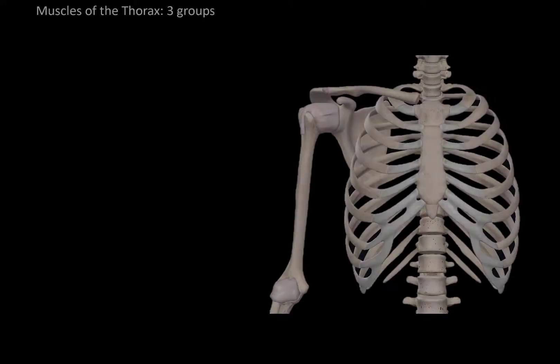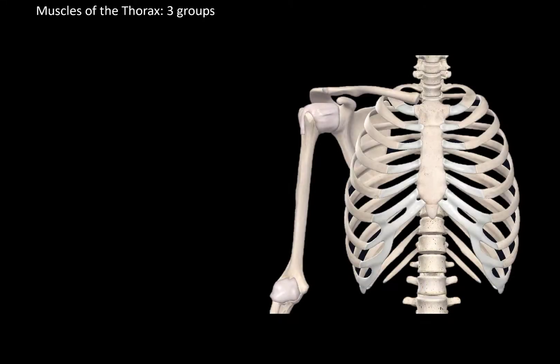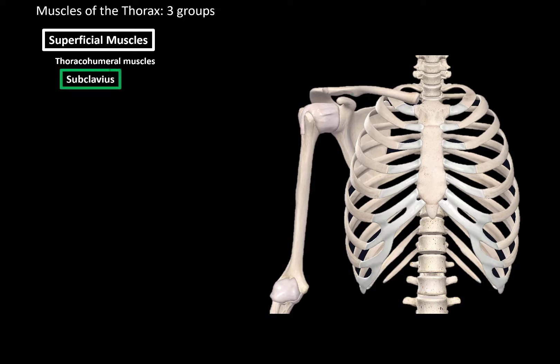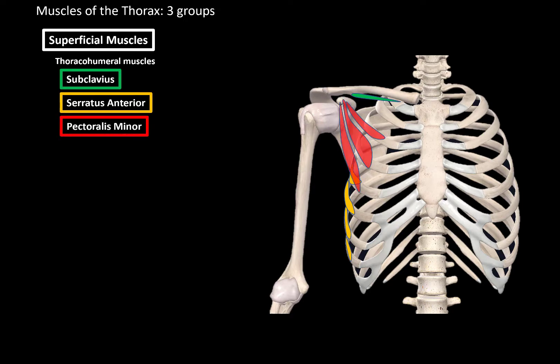Now, depending on the source you're studying from, muscles of the thorax can be divided into three groups. The first group are the superficial muscles of the thorax, also called the thoracohumeral muscles, because they act on upper limb movement. These are the subclavius, serratus anterior, pectoralis minor, and pectoralis major.